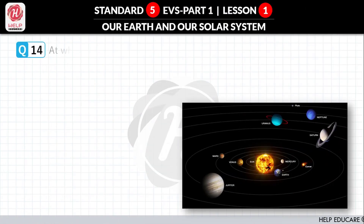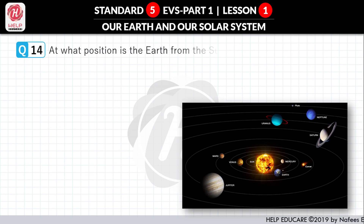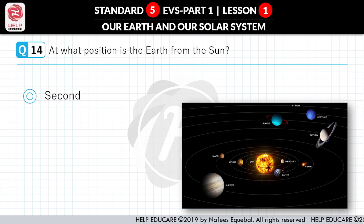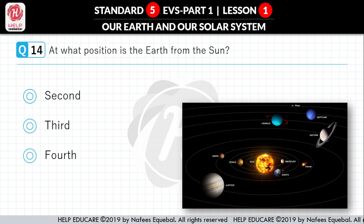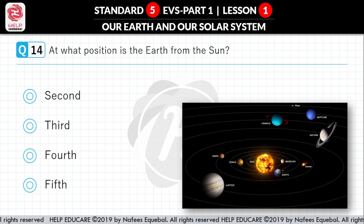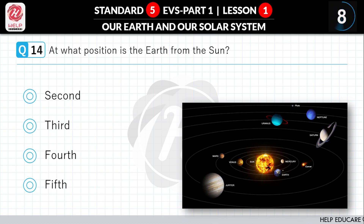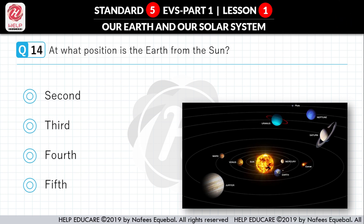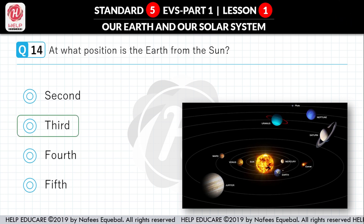Question No. 14: At what position is the Earth from the Sun? First option: 2nd. Second option: 3rd. Third option: 4th. Fourth option: 5th. Correct answer is 3rd.